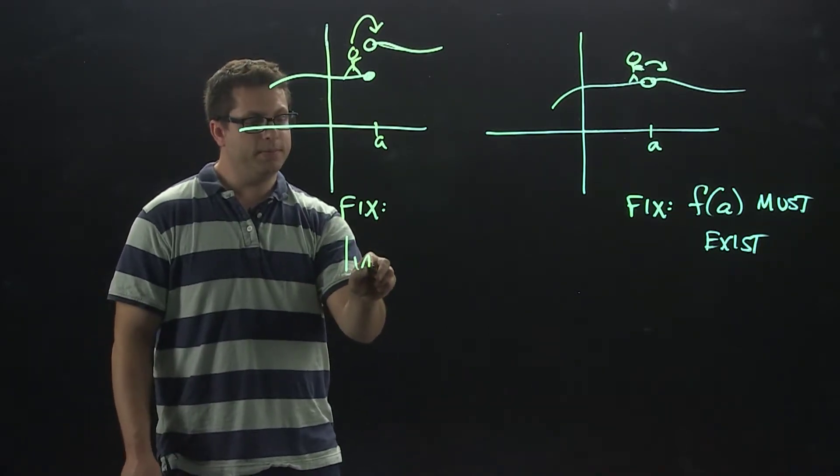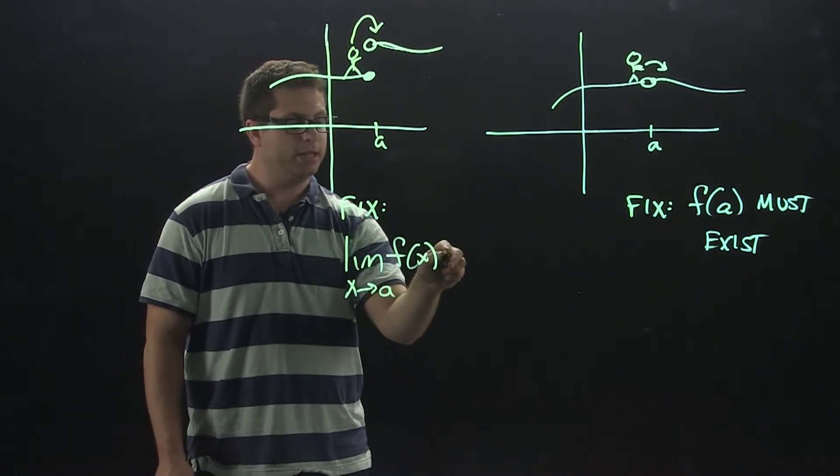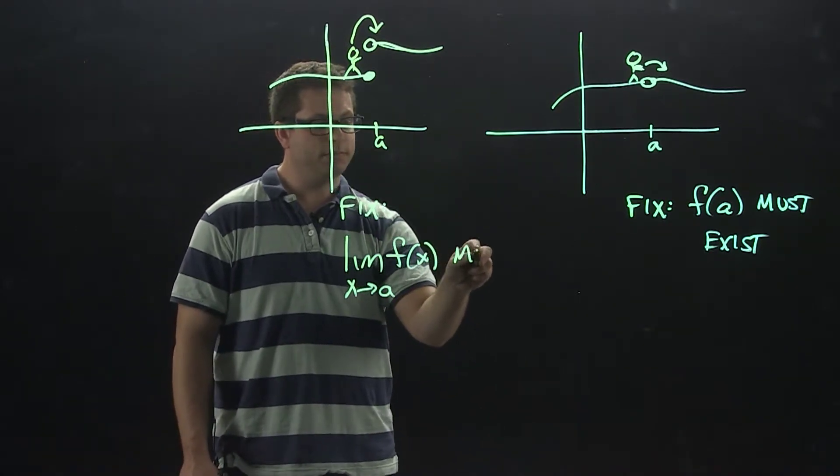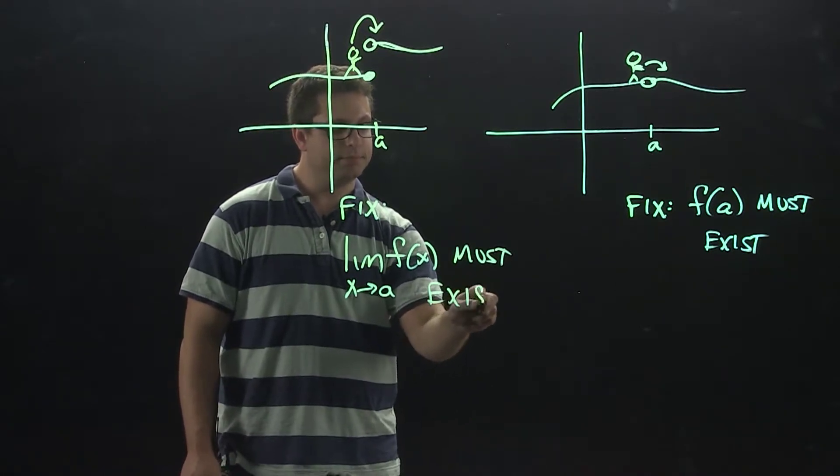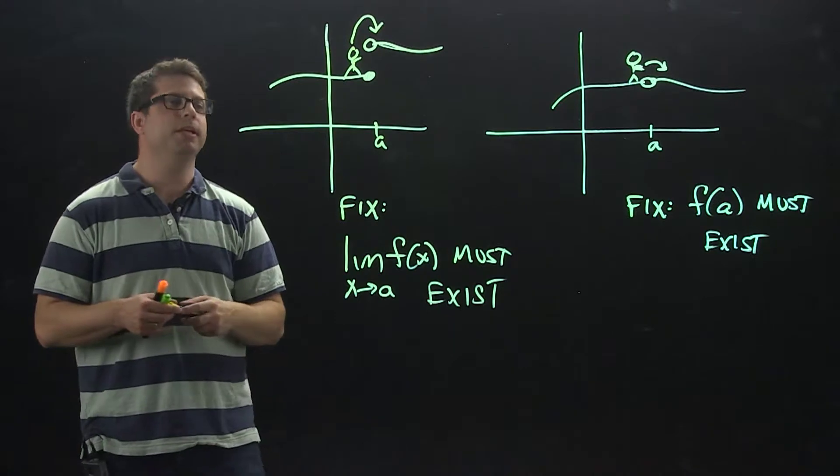Let's write that down. The limit, as x approaches a, of your function, has to exist. I'm going to write must exist. That's condition two that has to be met in order to be continuous.